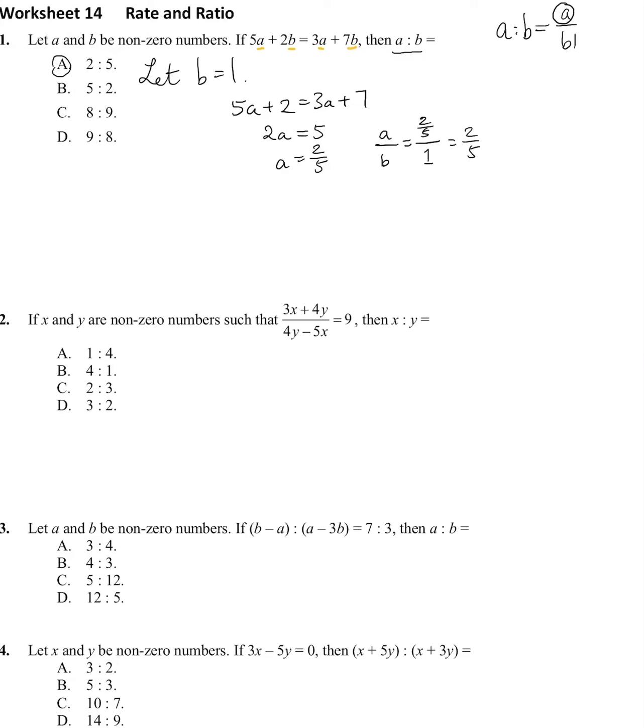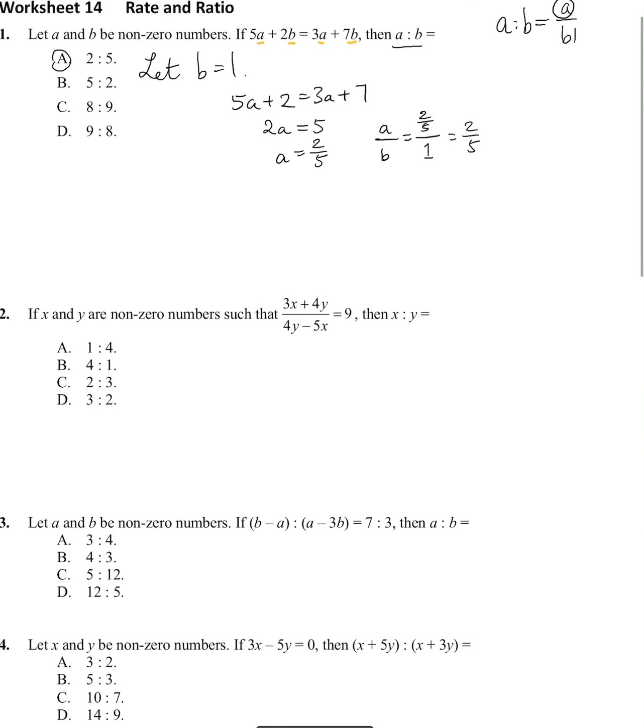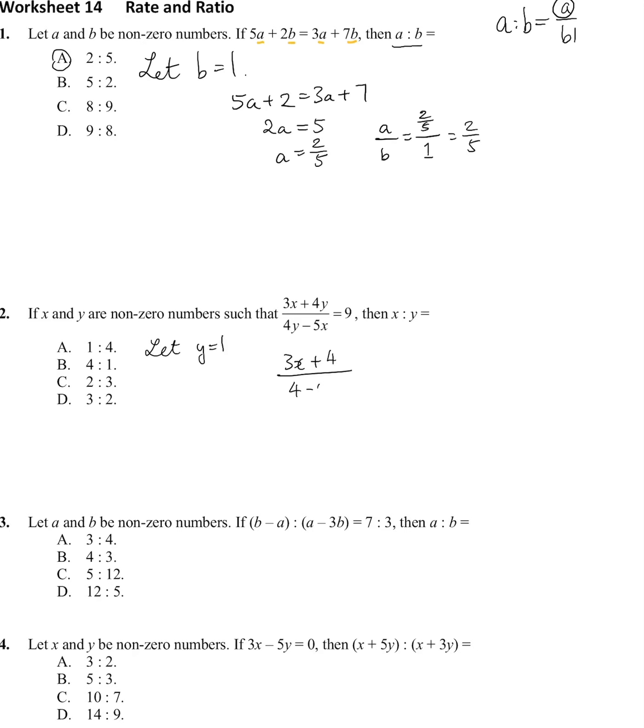It's much quicker than doing the proper way. You can see number 2 as well. Let y equal to 1. So 4 times y is 4 over 4 minus 5x equals 9, and first let's multiply this denominator to the other side, so it's 36 minus 45x.